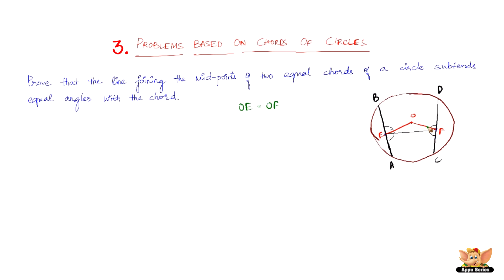In an isosceles triangle, the angles opposite to equal sides are equal, so angle OEF equals angle OFE. Since OE and OF are perpendicular distances to the chords, those angles to the chords are 90 degrees. Subtracting angle OEF from 90 degrees gives one pair of angles, and subtracting angle OFE from 90 degrees gives the matching angle — so 90° minus angle OEF equals 90° minus angle OFE.